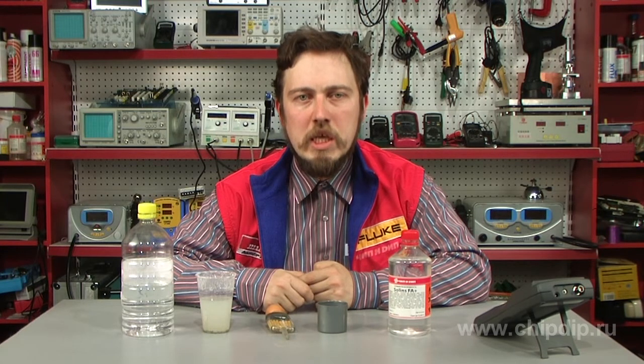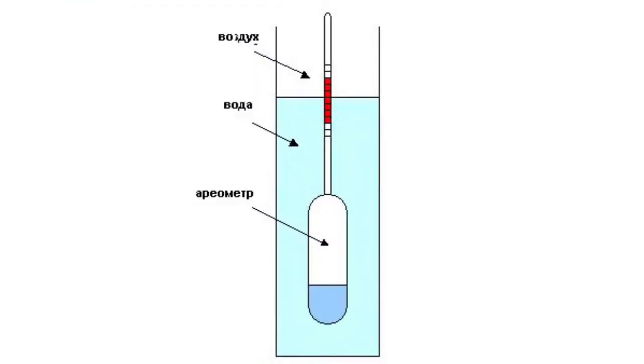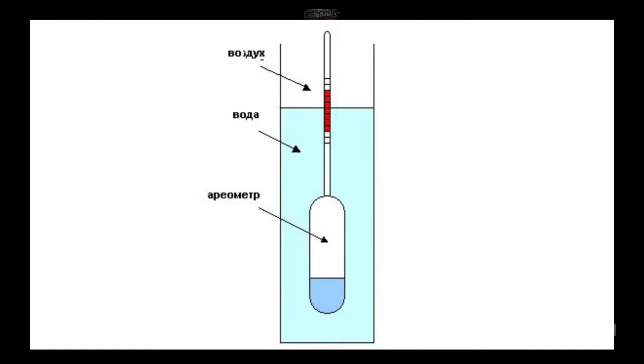Hydrometer. This device is used to measure the density of liquids and solids. The operation of the hydrometer is based on the Archimedes principle: the weight of a fluid displaced by a suspended solid — in this case the hydrometer — equals its weight. The immersion depth of a hydrometer, the volume of the fluid displaced by it, and the weight of the hydrometer can show the density of the test fluid.